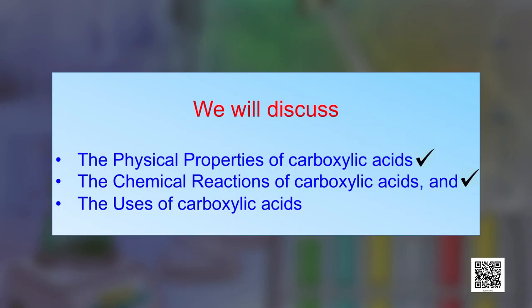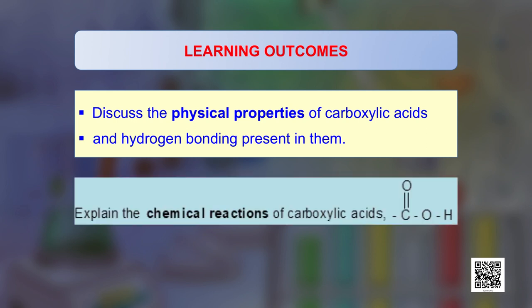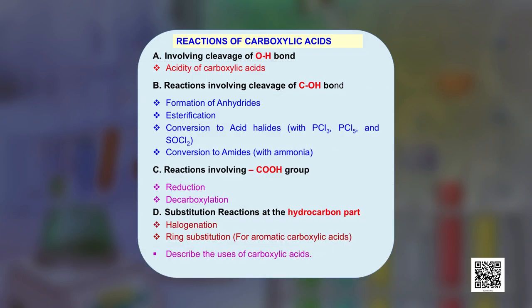We will cover the chemical reactions of carboxylic acids and their uses. The learning outcomes of this program will be to discuss the physical properties of carboxylic acids, the hydrogen bonding present in them, and the chemical reactions of carboxylic acids.